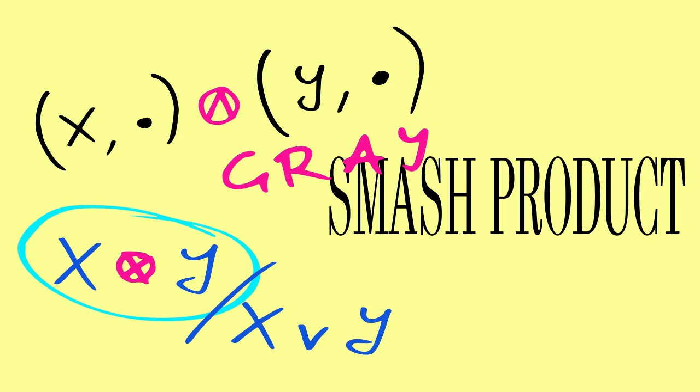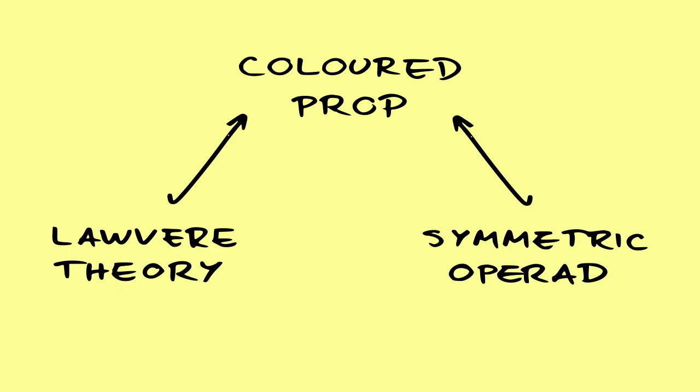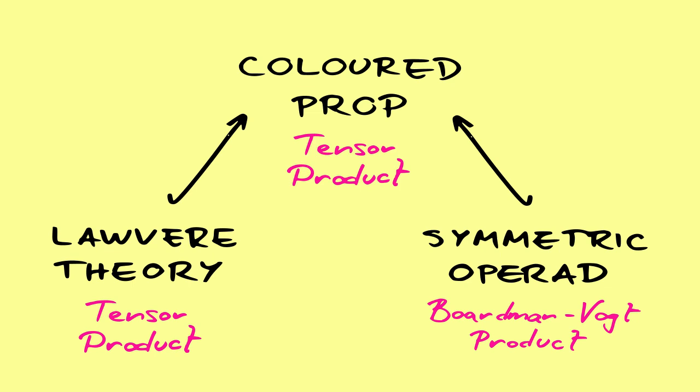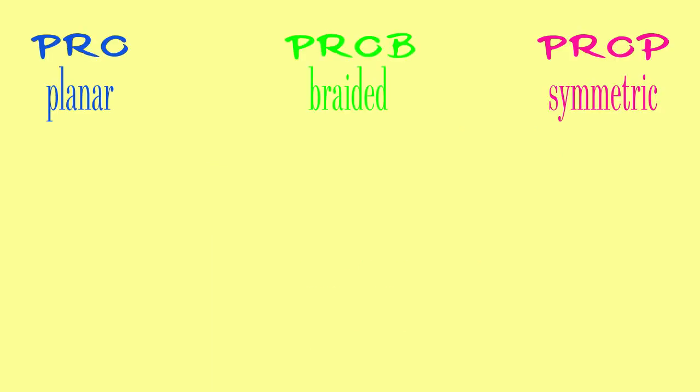In my second paper, I show that this Gray smash product has a surprising connection with the construction of props in categorical universal algebra. The colored prop is one of the gadgets we use to describe generalized algebraic theories. It generalizes both Lawvere theories and symmetric operads. And there is a tensor product operation on props that generalizes both the tensor product of Lawvere theories and the Boardman-Vogt product of symmetric operads. Now, there are a planar and braided non-symmetric version of props. They are called pros and probs, respectively.